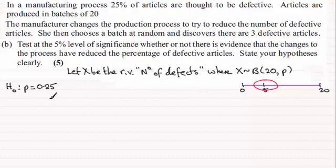So the alternative hypothesis is going to be that p is less than 0.25. And we'll be testing at the 5% level of significance. And we've seen that we're testing it with the fact that we've discovered that there's 3 defective articles. So the observed value x is 3.